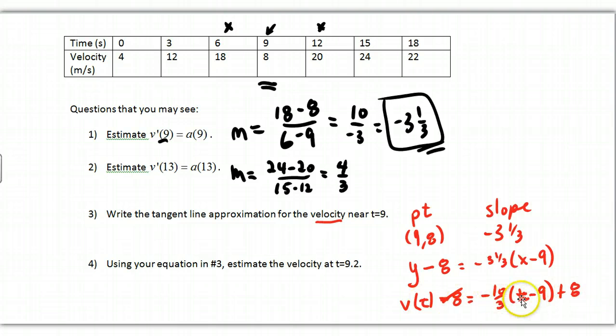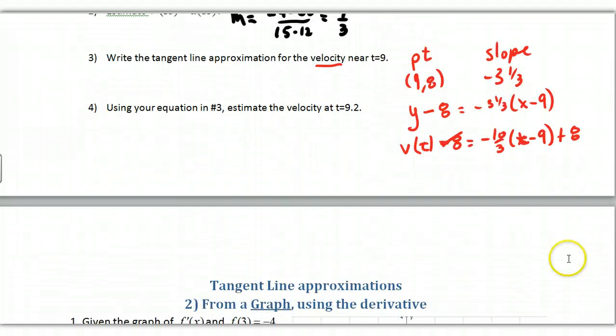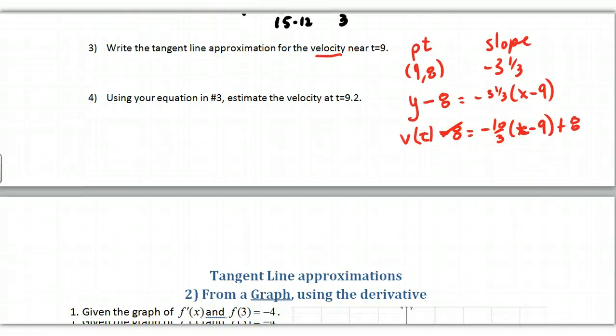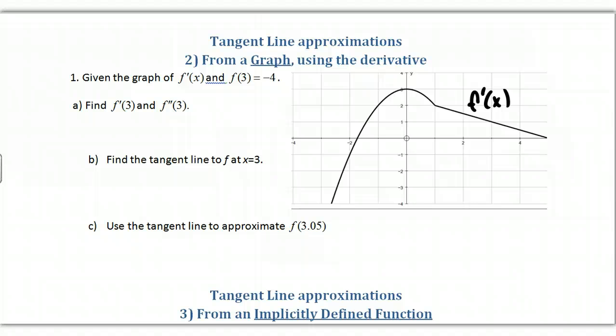I had to record over this, so I don't know what I was saying at the time, but we need to move on. It's an approximation for the velocity in and around that area, 9, 8. Tangent line approximation from a graph using a derivative. This is a graph and it is F prime. You've got to read and make sure, are you looking at F or are you looking at F prime? They also gave us information about a point.